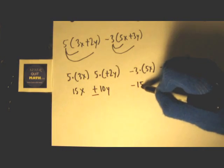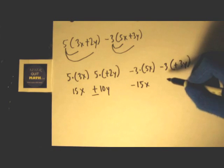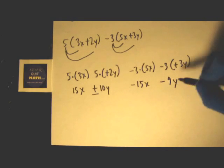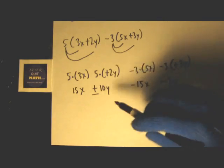Over here, -3 times 5 is gonna be -15X. Then we're gonna have -3 times 3, and that's gonna be -9Y. Following our rules, now we just combine the terms.